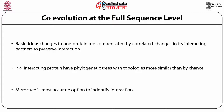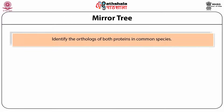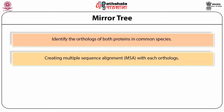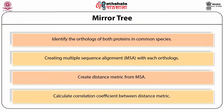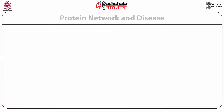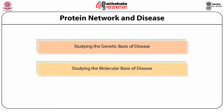Mirror tree identifies orthologs of both proteins in common species, creates multiple sequence alignments, creates a distance metric from MSA, and calculates the correlation coefficient between distance metrics. Using PPI network analysis to study disease involves studying the genetic basis and molecular basis of disease — understanding what changes occur at the genetic level and identifying what can address those diseases.